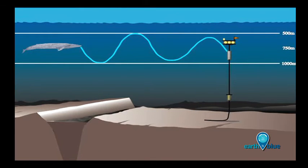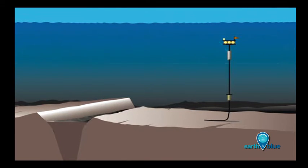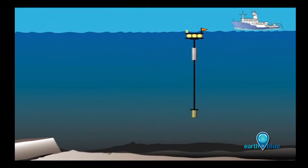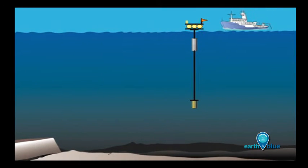At the end of two years, we'll come back and we'll use a transponder to send a signal to the acoustic release, which then releases the entire mooring except for the anchor to the surface so that we'll be able to recover it.